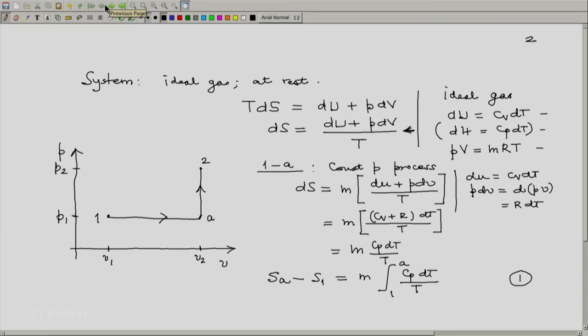And now going back to our previous sketch, we will notice that states A and state 1, they are on the same isobar, same pressure line. So pressure is constant, so we will have TA by T1 equal to VA by V1 but since VA equals V2, this will be equal to V2 by V1.